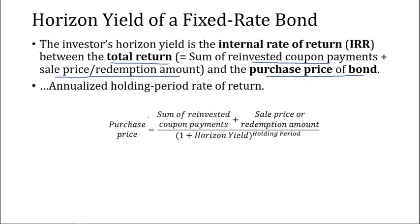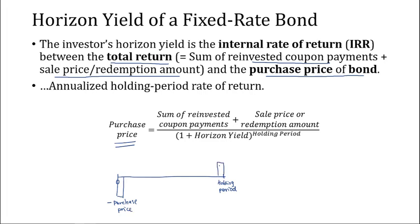Expressed in a formula, the purchase price is the sum of reinvested coupon payments plus the sell price or redemption amount, and we divide it by 1 plus the horizon yield raised to the power of the holding period. If you draw a timeline, at time zero the investor would have to pay the purchase price, shown as a negative cash flow. At the end of the holding period, we have the sum of reinvested coupon payments and the sell price or the redemption amount. The horizon yield is the IRR which links the purchase price to the PV of the cash flows at the end of the holding period.